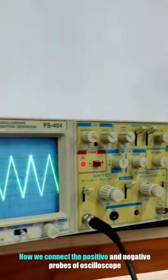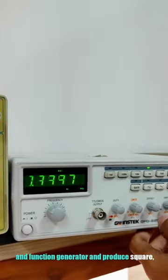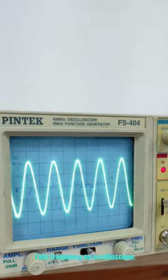Now we connect the positive and negative probes of oscilloscope and function generator and produce square, triangular, and sinusoidal waves with one kilohertz frequency on oscilloscope.